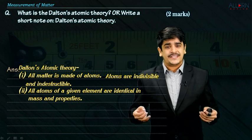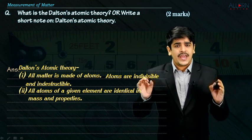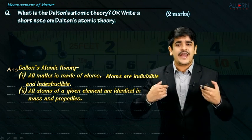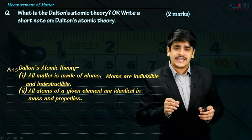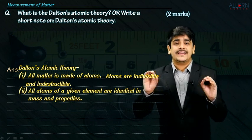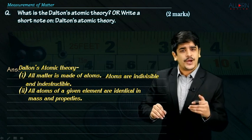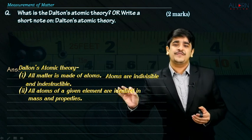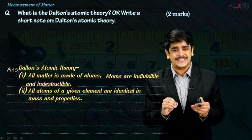If I inspect each and every atom of gold, I will understand that all of the atoms of gold are exactly the same. Their masses are exactly the same. Their physical and chemical properties are also going to be exactly the same.